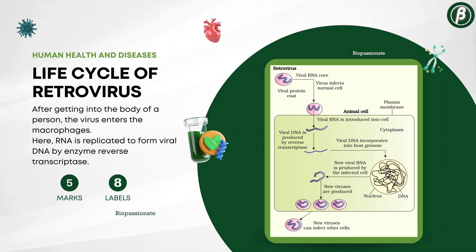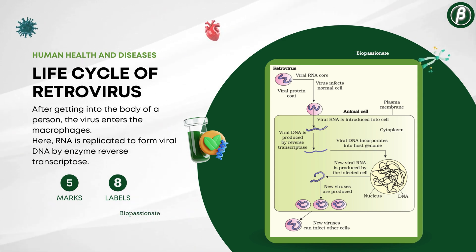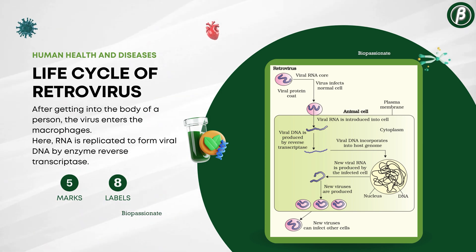Number 14: The line diagram of the life cycle of retrovirus, for 5 marks with a minimum of 8 labels.